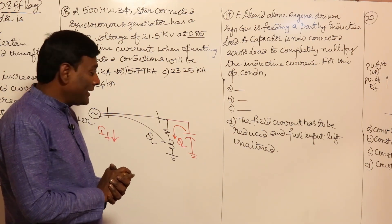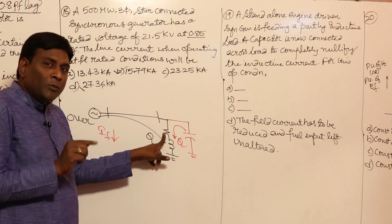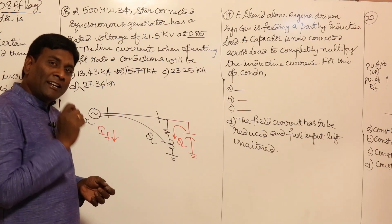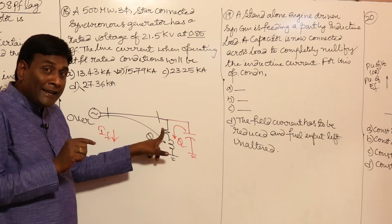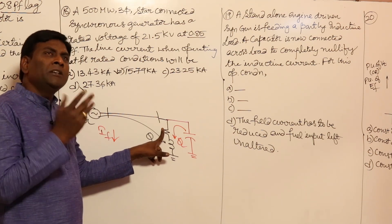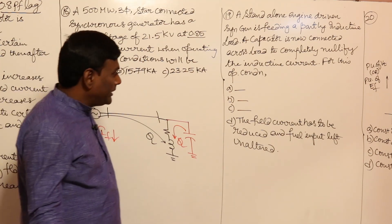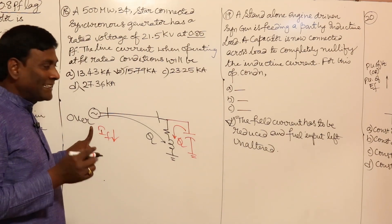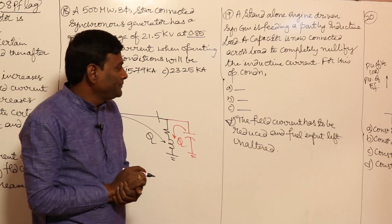Field current has to be reduced from over-excitation to normal excitation. What about fuel input? It should remain unchanged, because the active power requirement of the resistive part of the load is the same. Reactive power can be delivered by anybody, but active power must be delivered by the generator only. So the answer is: field current is reduced and fuel input is left unaltered.